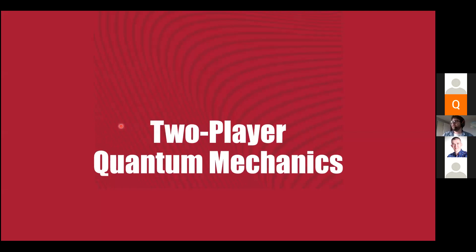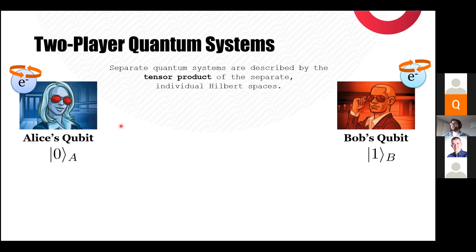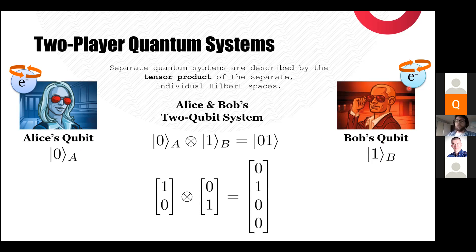One of the postulates of quantum mechanics is that separate quantum systems are described by the tensor product of their individual Hilbert spaces. A Hilbert space is a vector space in which the vector corresponding to Alice's or Bob's qubit lives. The tensor product of those spaces is a way to merge those two abstract linear algebra spaces together, basically finding a way to describe both qubits at the same time.